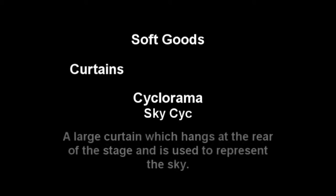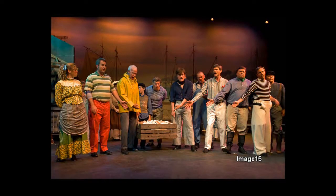The cyclorama, or sky psych as it is sometimes referred to, is a large curtain which hangs at the rear of the stage. The purpose of the cyclorama is to create the illusion of the sky. The sky psych is a white fabric on which lights of different colors are reflected to create the different kinds of sky.